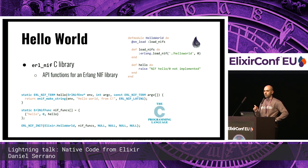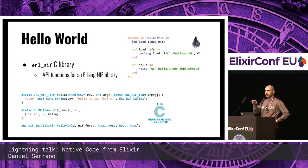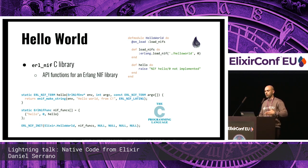ErlNIF term will be every possible Erlang term that you want to return from C land back into Erlang. You have these ENIF functions in C to coerce C land types into Erlang terms, and the function always takes three arguments: the ErlNIF env, the argc, and argv — exactly what you'd expect — the number of arguments and the arguments themselves as ErlNIF terms coming from Erlang.